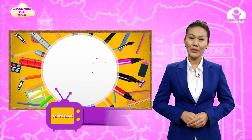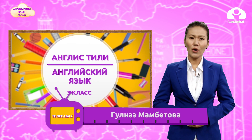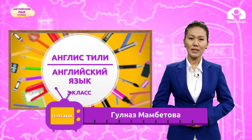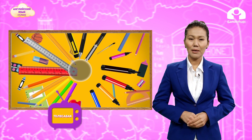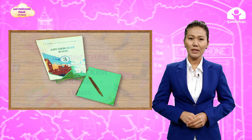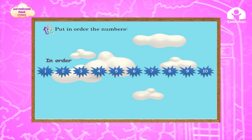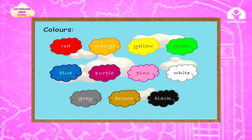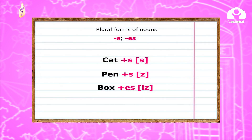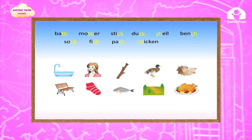Hello children, how are you? I hope you are all fine today and ready to start our lesson. My name is Gulnaz. Prepare your books, copybooks, pens and pencils. But before, let's take a look at things we are planning to do: review subjects, numbers, colors, learn about the plural forms of nouns, learn the sounds, practice exercises, and watch the video. Okay, let's get it started!